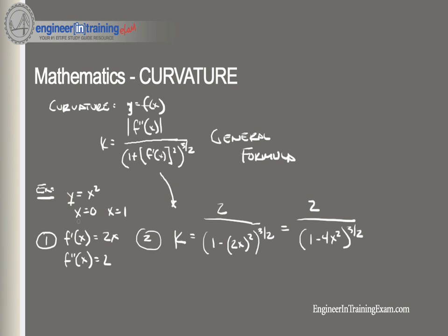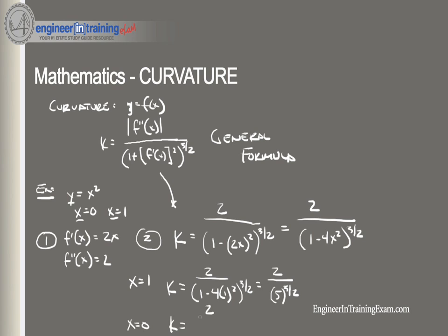Now all we need to do is plug in our values. At x is equal to 1, we get K is equal to 2 divided by 1 plus 4 times 1 squared raised to the three halves, and we find our curvature at that point is 2 divided by 5 raised to the three halves. Now at x equals 0, K is equal to 2 divided by 1 plus 4 times 0 squared raised to the three halves, and we find that the curvature at x equals 0 is equal to 2. That's how we use the general formula of curvature to determine the curvature at any given point.